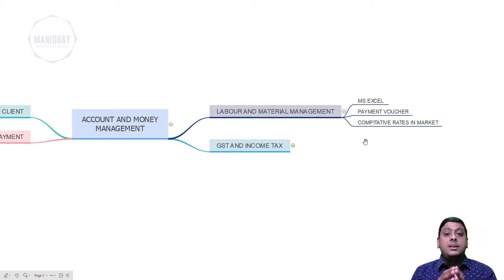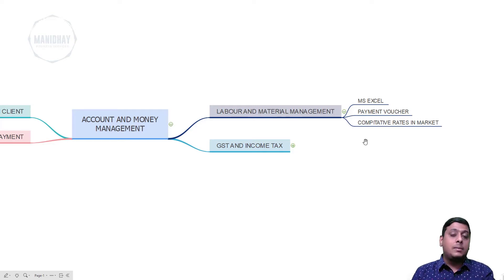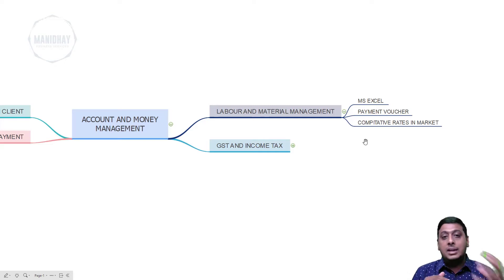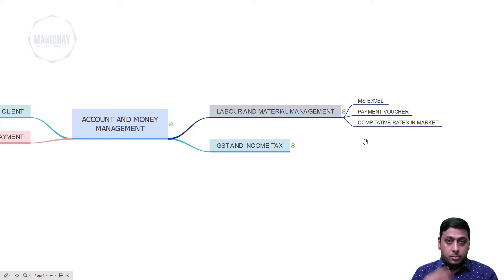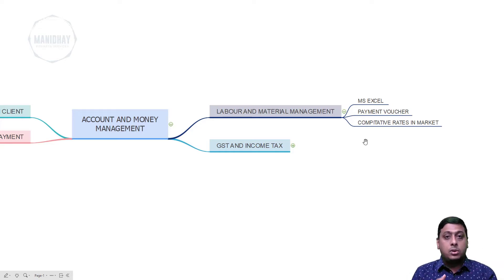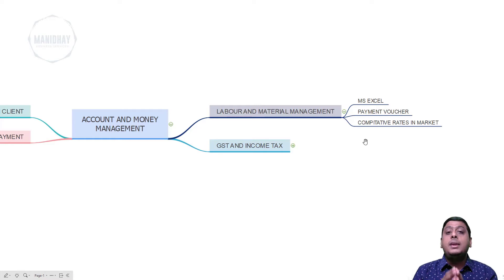You should survey competitive rates in the market properly before finalizing your labor and material supplier team, because there might be situations where you can get a very skilled laborer at a very low price and save a huge amount of money. Similarly, for material suppliers, depending on the quantity you are buying, you can ask for discounts. When you take the complete material project, you as the engineer will be benefited.